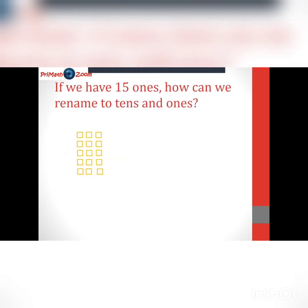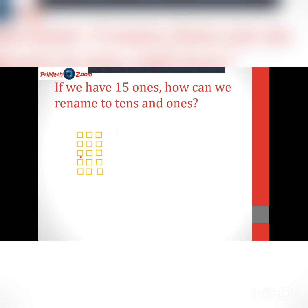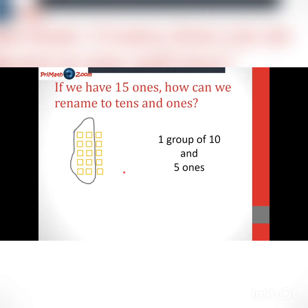If we have 15 ones, how can we rename them as tens and ones? Remember that ten of these little ones give us one ten. So we counted off ten out of the 15 ones and we got one ten. Then we counted the remaining ones: one, two, three, four, five. So we got one group of ten and five ones.